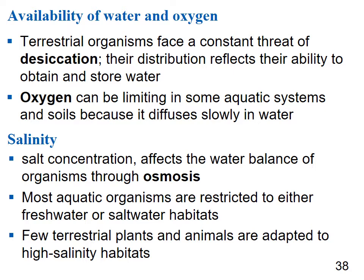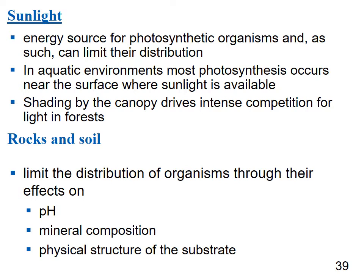Few terrestrial plants and animals are adapted to high-salinity environments. Sunlight is another major limiting factor — photosynthetic organisms need sunlight and their distribution is limited without it. In aquatic environments, most photosynthesis occurs near the surface. In terrestrial environments, canopy shading drives intense competition for light in forests. Soil type affects pH, nutrient availability, and the physical structure of the substrate, all of which can limit organisms.